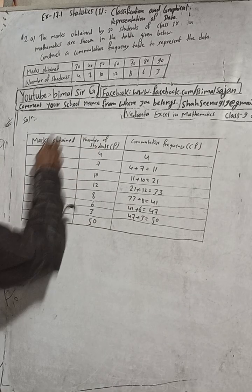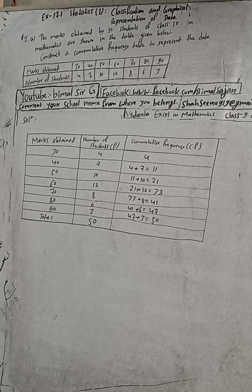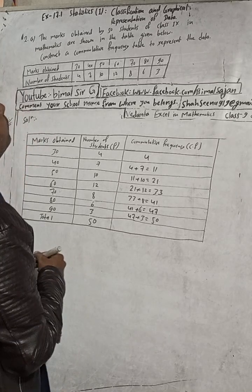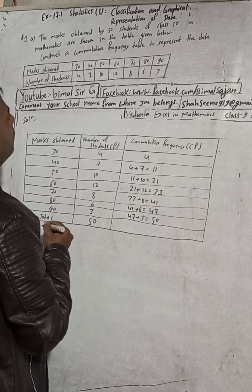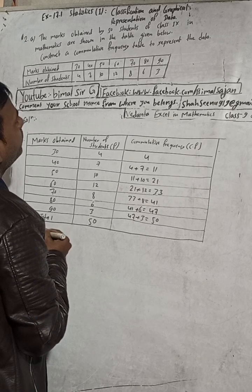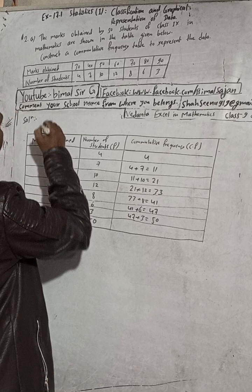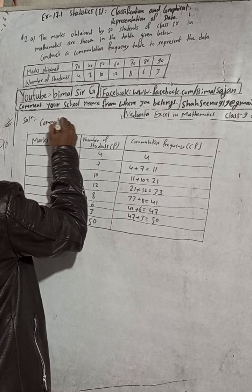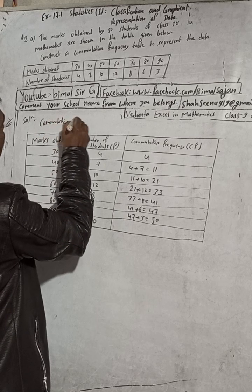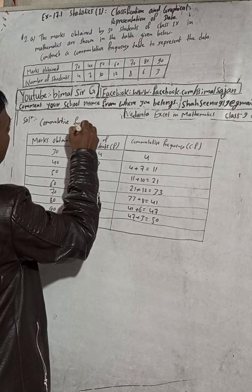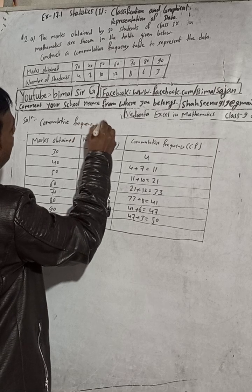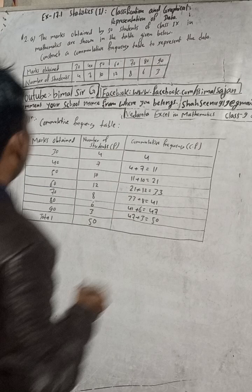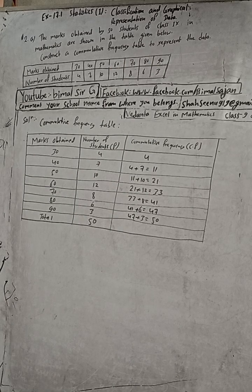If you want to write the heading, you can write here: Construction of Cumulative Frequency Table. So cumulative frequency table is ready. From here it is sufficient.